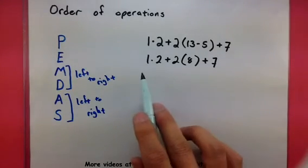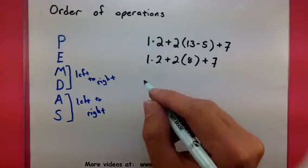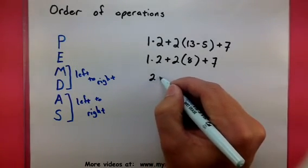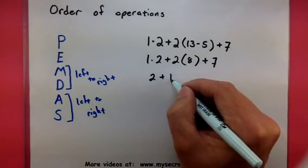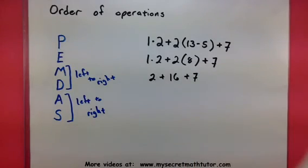Now we go through, and we have some multiplication to take care of. 1 times 2 is 2, and 2 times 8 is 16.